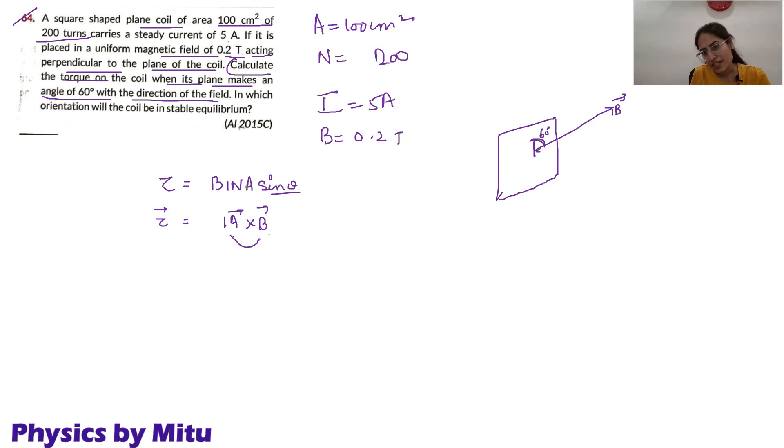And in other terms, we call it normal to the coil and magnetic field. Now, the normal to the coil is something like this. What is this angle? This angle will be 30 of course, because the normal makes angle 90 with the plane. If this is 60, this will be 30.